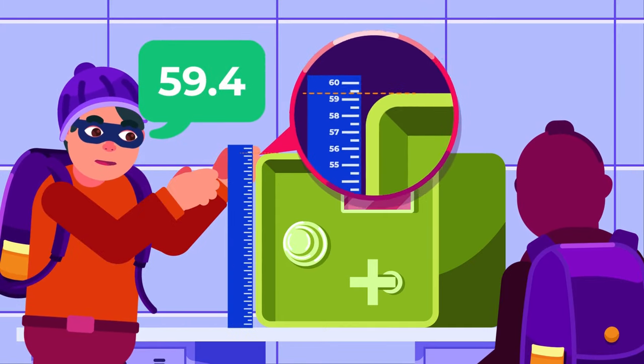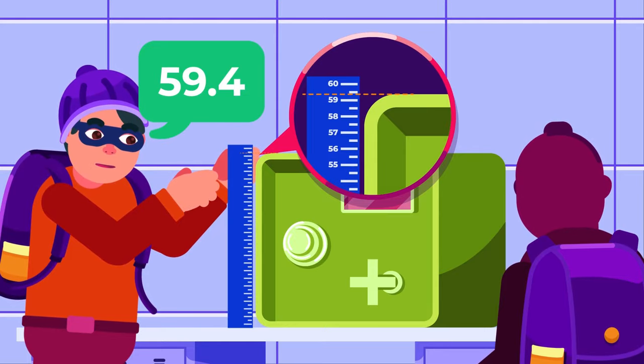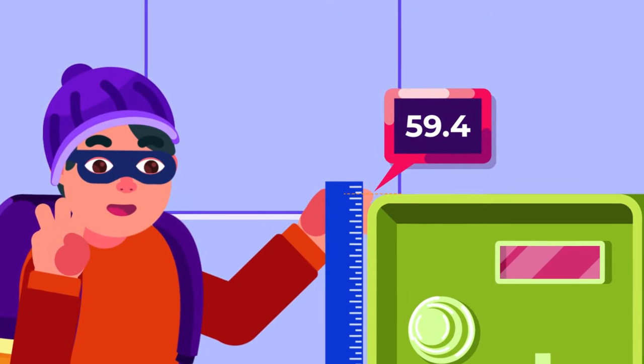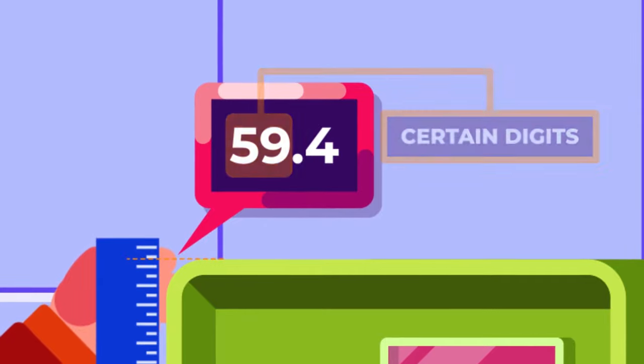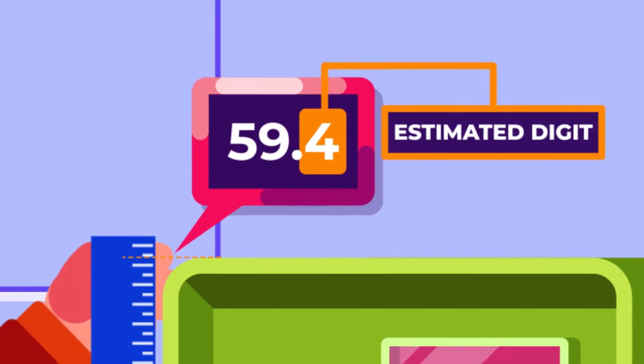Take a length measurement of 59.4 cm, for example. It has three significant figures. The 5 and 9 are certain digits, while 4 is a doubted or uncertain one.